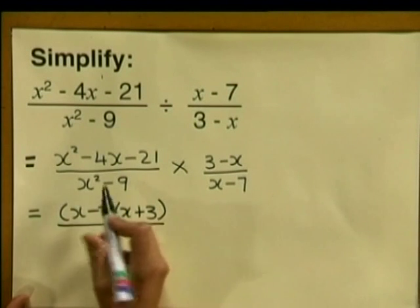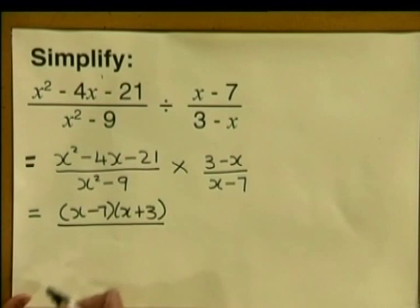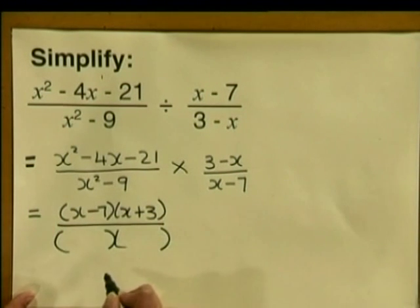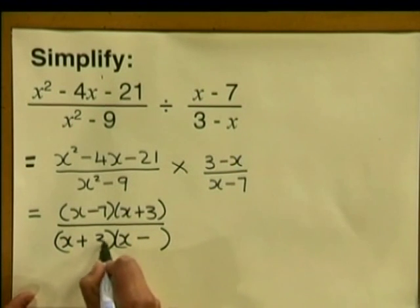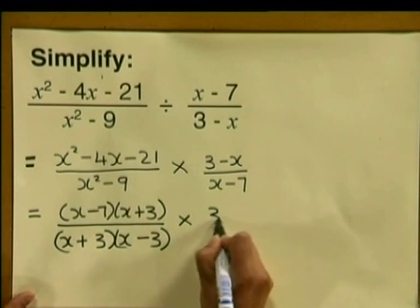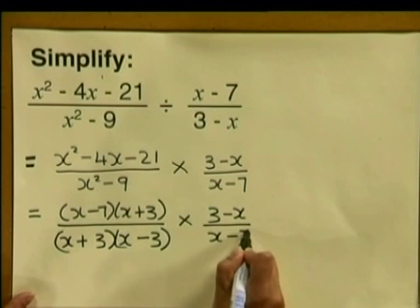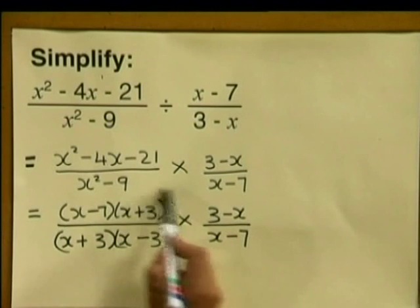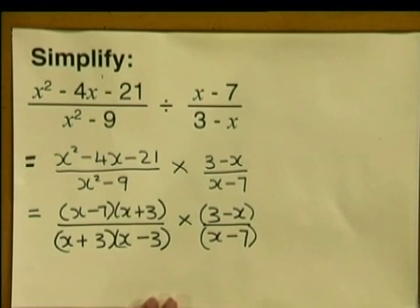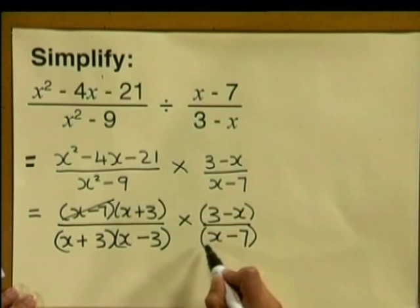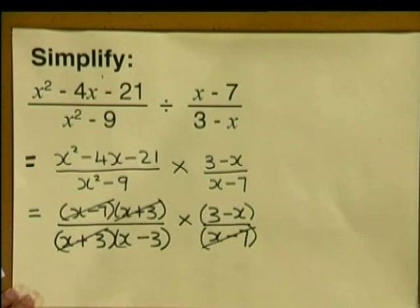Now we divide by our denominator. The denominator X squared minus 9 is a difference of two squares — we know how to factorize that. We put down two brackets with a plus sign in one and a minus sign in the other. The square root of X squared is X, and the square root of 9 is 3, giving us X plus 3 and X minus 3. We then multiply by 3 minus X divided by X minus 7. Now we cancel our factors: X minus 7 cancels with X minus 7, and X plus 3 cancels with X plus 3. We are left with 3 minus X divided by X minus 3.